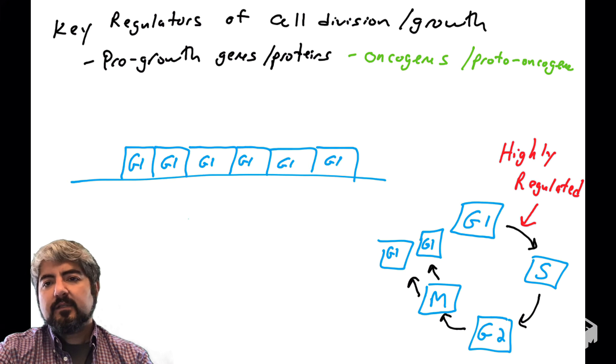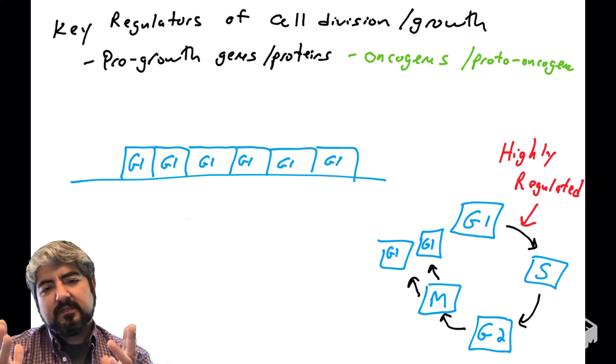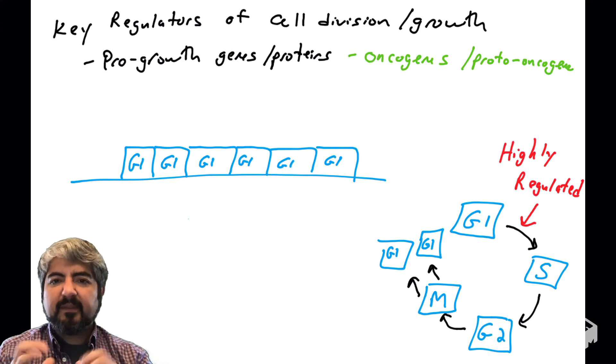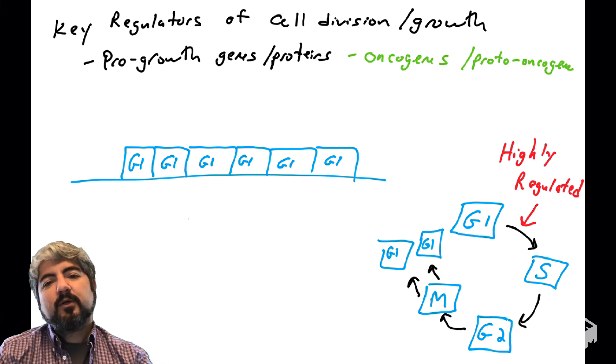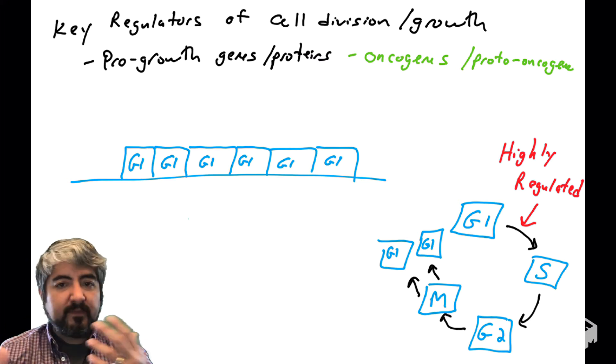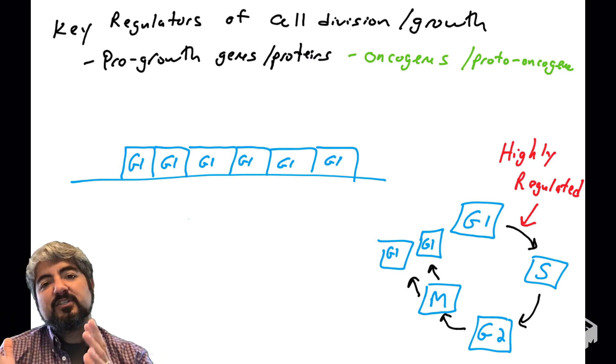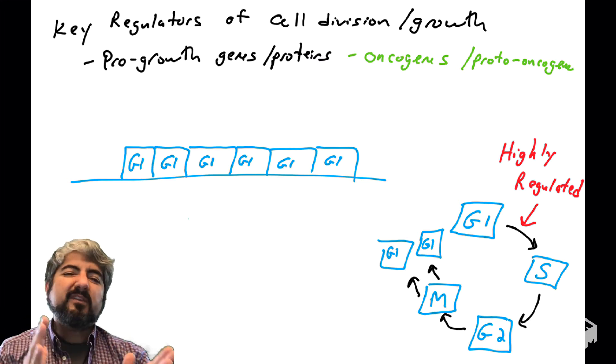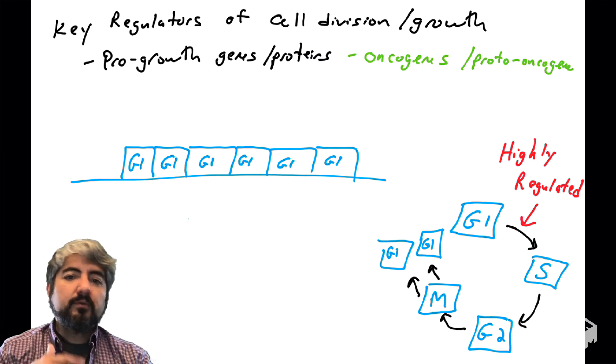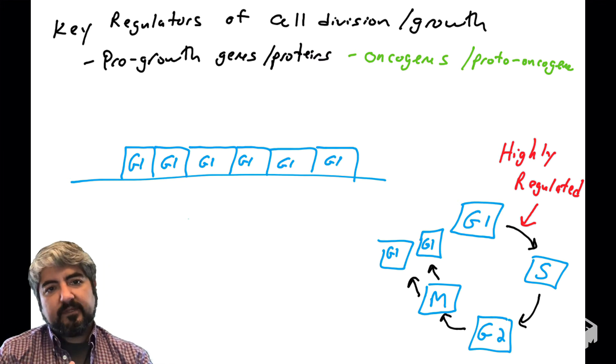In humans, in normal cells, we have oncogenes in our normal cells, but they're not mutated, so they're their normal version, which we call proto-oncogenes. So proto-oncogenes regulate the normal movement through the cell cycle. If proto-oncogenes are mutated, that's when we call them oncogenes, and they promote abnormal movement through the cell cycle.